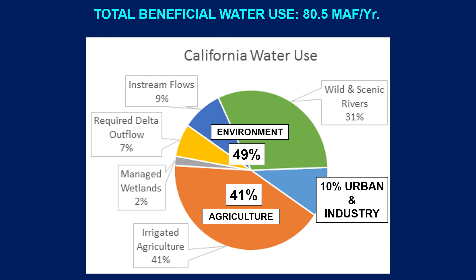Of this, 39 million acre feet are for environmental use and agriculture has 33 million acre feet. In total, the annual beneficial water use is around 8.5 million acre feet per year. Although this is not a fixed amount — it changes from year to year — on an average year, that's what we generally have.